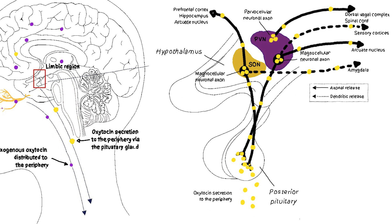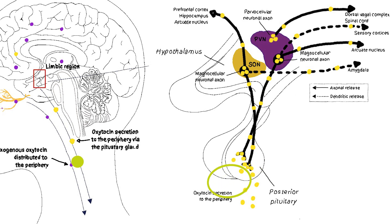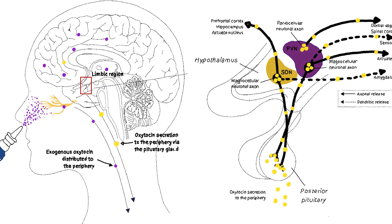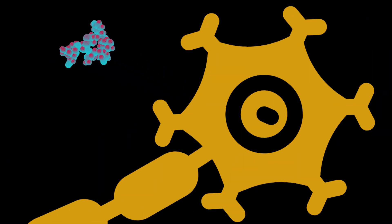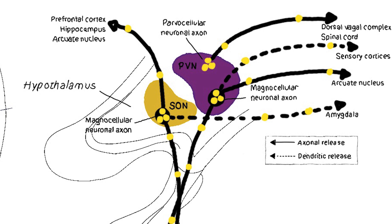Oxytocin acts both in the body, where it's important for reproductive functions, and in the brain, where it's important for social behavior. To get into the body, some of the oxytocin-producing neurons project to the posterior lobe of the pituitary gland, which then releases oxytocin into the bloodstream. To get into the brain, oxytocin neurons project to various brain regions. Interestingly, oxytocin is not only released from axons of neurons, but also from cell bodies and dendrites. In this image, the dashed lines show dendritic or cell body release of oxytocin, whereas the solid lines show the axonal projections.